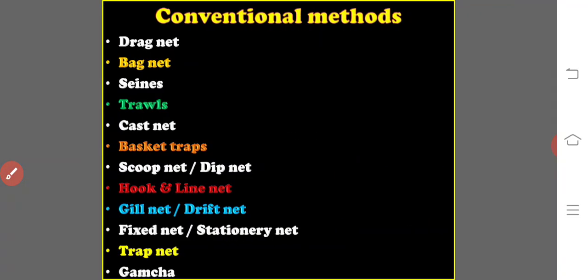In conventional methods — recognized by general consent or accepted usage — various forms of netting operations, traps, hook and line operations, etc., are used. A net is a piece of webbing where cotton, silk, hemp, or nylon filaments are used to make meshes of a definite size. These may be simple interlacing or knotted at the points of intersection between twines.